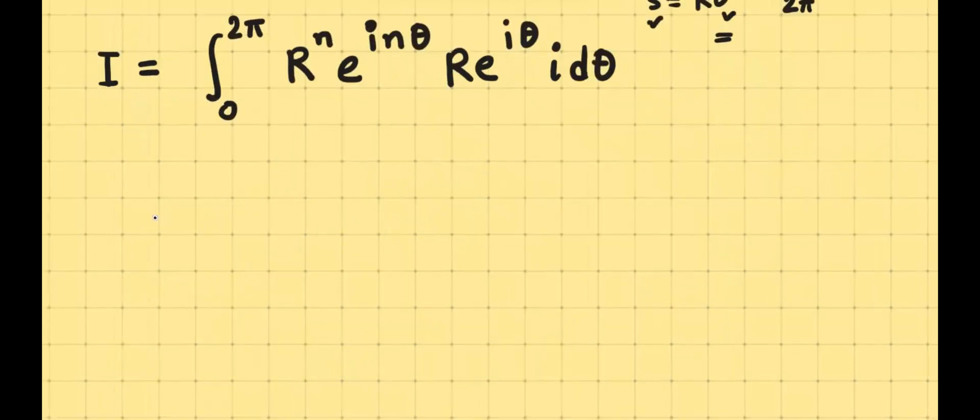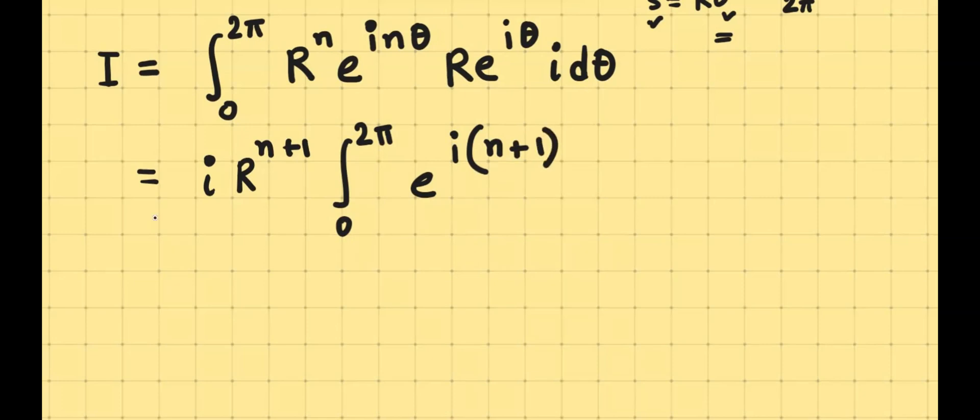Once we simplify this, we'll find the integral to be i times R to the power n plus 1, and then the integral from 0 to 2π, e to the power i times (n plus 1) theta d theta.